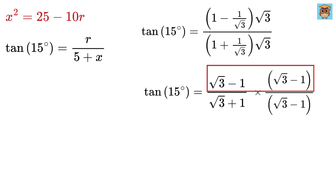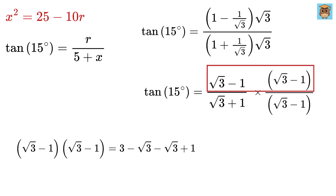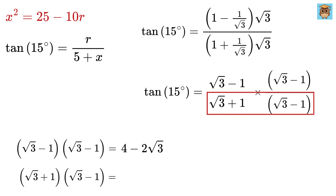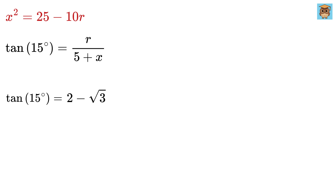Expanding the numerator: (root 3 minus 1) times (root 3 minus 1). Root 3 times root 3 gives 3, root 3 times minus 1 gives minus root 3, minus 1 times root 3 gives minus root 3, and minus 1 times minus 1 gives plus 1. Adding up, the numerator becomes 4 minus 2 root 3. For the denominator: (root 3 plus 1)(root 3 minus 1) gives root 3 squared minus 1 squared, which is 3 minus 1, equaling 2. So tan(15°) equals (4 minus 2 root 3) over 2, which simplifies to 2 minus root 3.